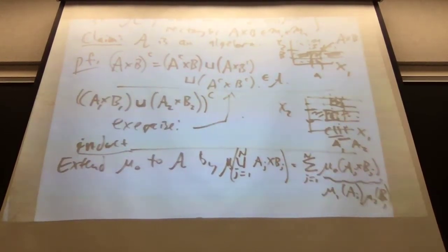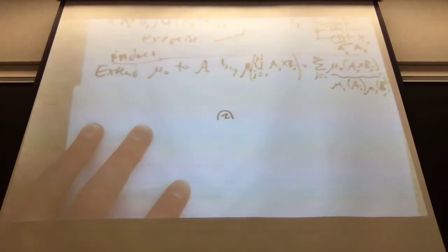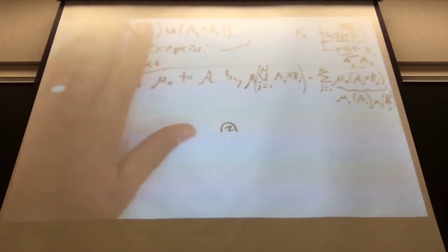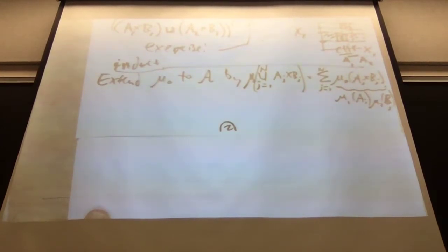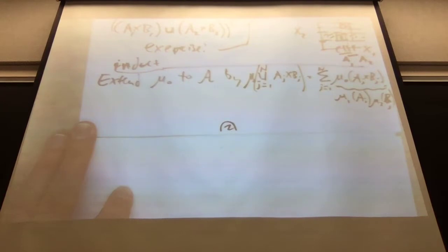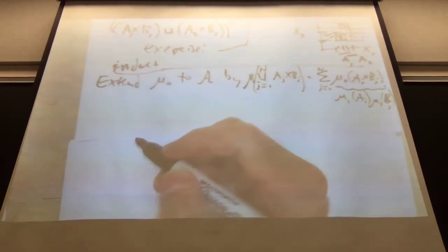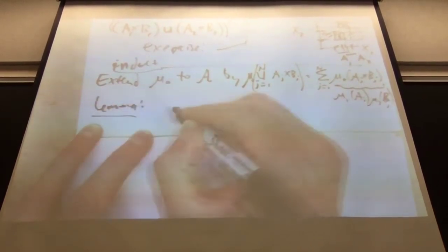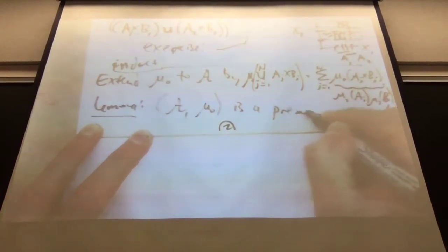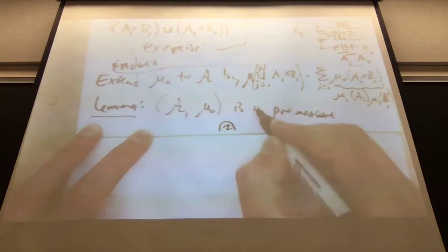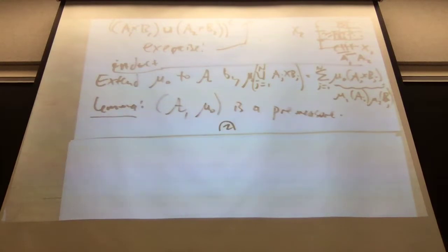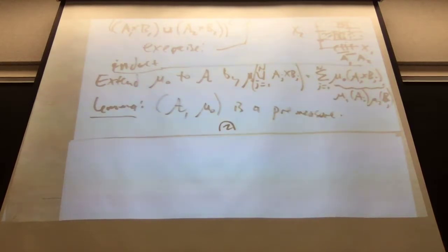Theorem — really a lemma — we have constructed a pre-measure. Remember what it means: countable additivity of mu_0 if it so happens that a countable union is a finite disjoint union of rectangles. If A cross B happens to be a countable disjoint union, we want mu_0 to be countably additive.